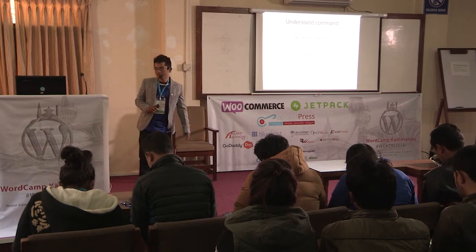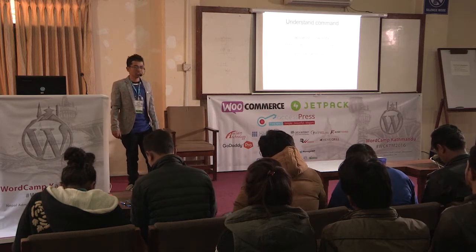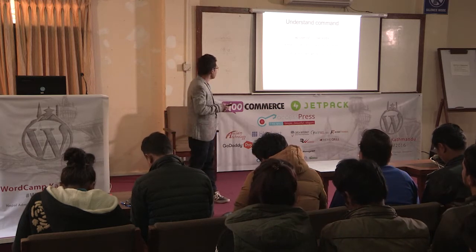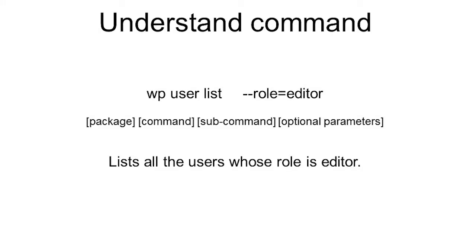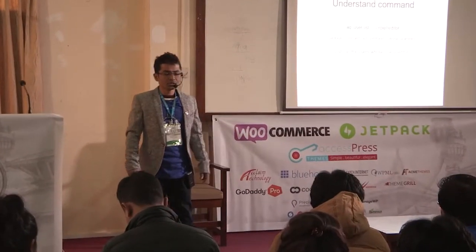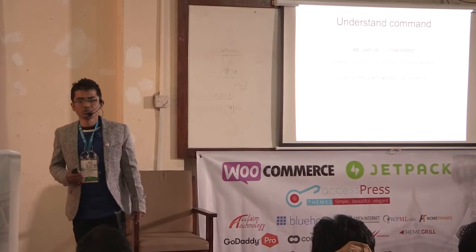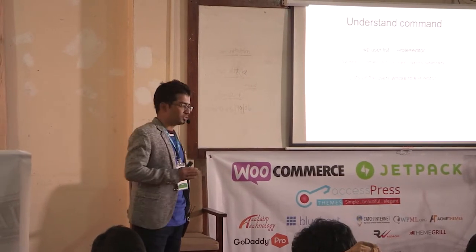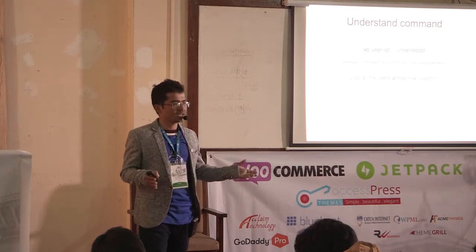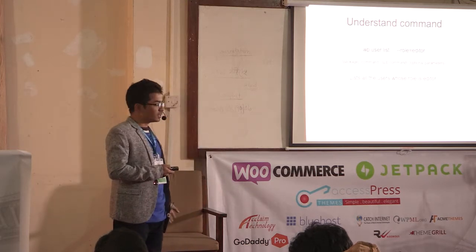Let's understand the command structure first. You can see the command on screen: WP user list --role=editor. This command is human readable. WP is the package, 'user' is the main command, 'list' is the sub-command, and --role=editor is the parameter. What this command does is pretty clear — it lists all users who have the role assigned as editor, without needing to open the browser.